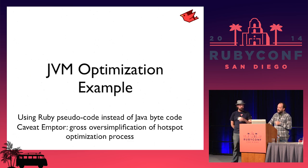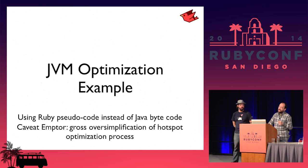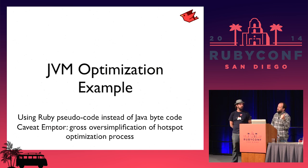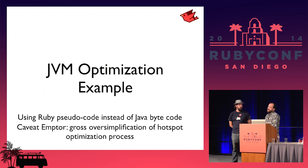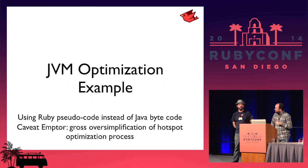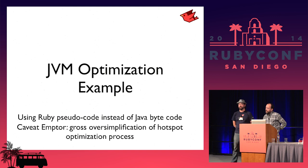The next thing I want to talk about is profiled optimizations. The JVM collects statistics as it's executing code, and if it collects the right statistics, it'll try some optimizations. We'll go through a highly contrived example — I'm going to show Ruby pseudocode, not Java bytecode. These optimizations may not happen in the order shown or even for this exact example, but these are techniques the JVM uses, and as we get better at generating good bytecode we'll take more and more advantage of them.